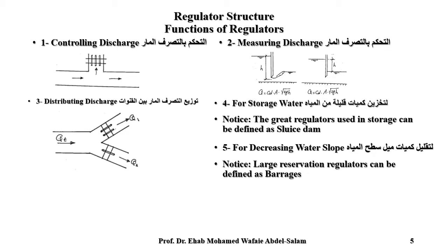The functions of regulators are: measuring discharge, distributing discharge, and storing water. A grid regulator used for storage can be defined as a low-head dam for decreasing water slope — decreasing water slope is very important. Large reservoir regulators can be defined as barrages.